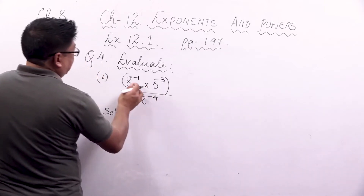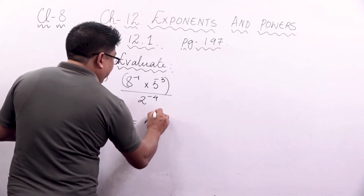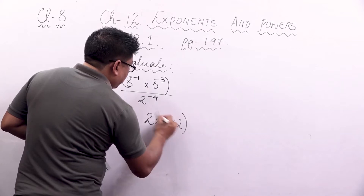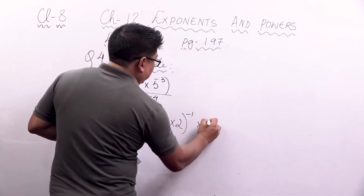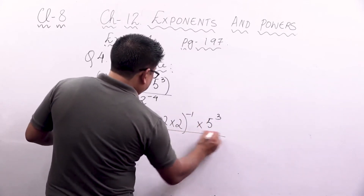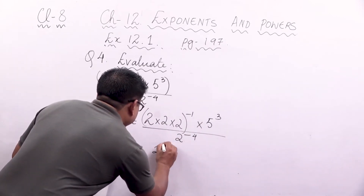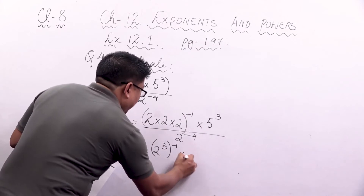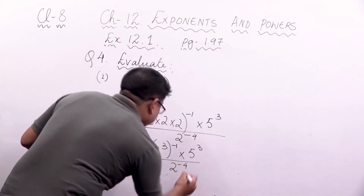So let's change 8 to factors of 2. That means if I multiply 2 three times I get 8. So I can write 2 into 2 into 2 to the power minus 1, which is 2 to the power 3, the whole to the power minus 1, into 5 to the power 3, divided by 2 to the power minus 4.